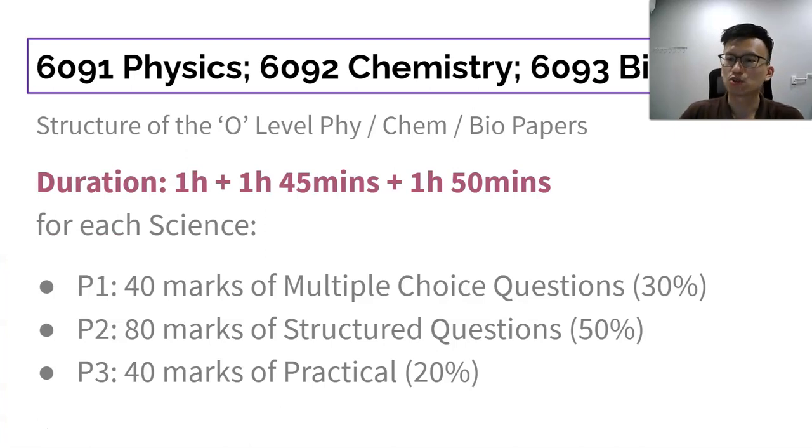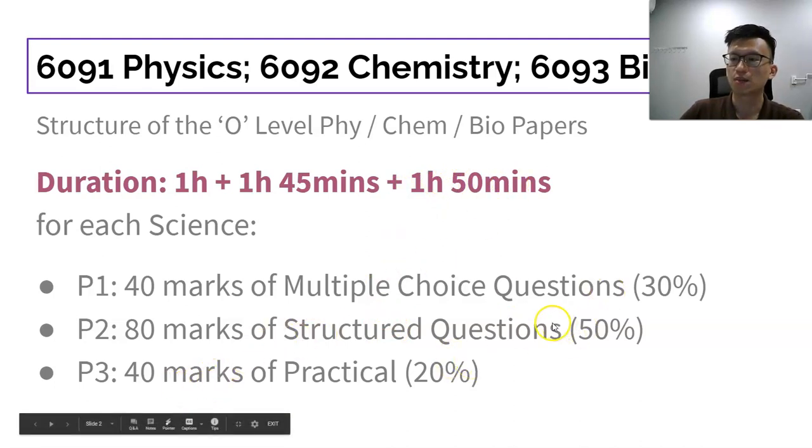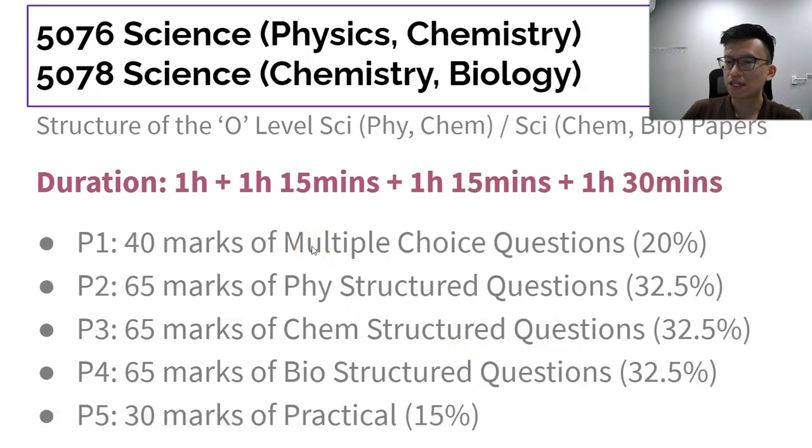This is the structure of the pure science examination formats. If you take O-level pure sciences, each science will have three papers. The first paper is one hour, 40 marks of MCQ. The second paper is one hour 45 minutes structured questions, and there's a one hour 15 minutes practical, 40 marks. In total, they make up 100% of the O-level score.